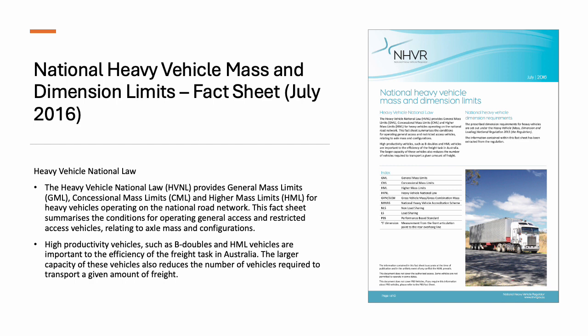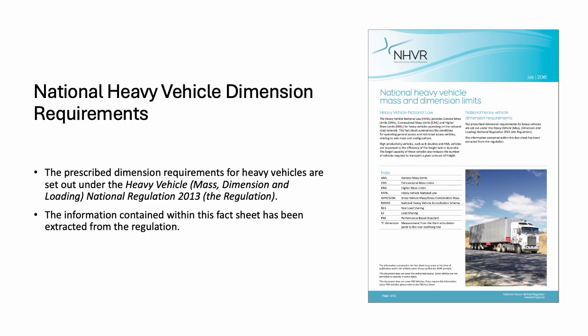High productivity vehicles such as B-doubles and HML vehicles are important to the efficiency of the freight task in Australia. The larger capacity of these vehicles also reduces the number of vehicles required to transport a given amount of freight. The prescribed dimension requirements for heavy vehicles are set out under the Heavy Vehicle Mass, Dimension and Loading National Regulation 2013.